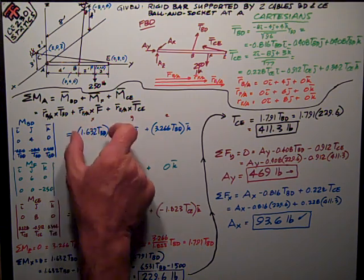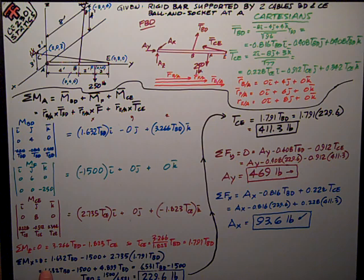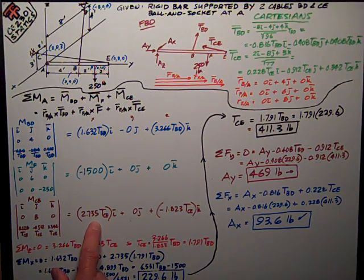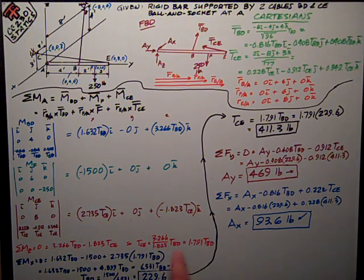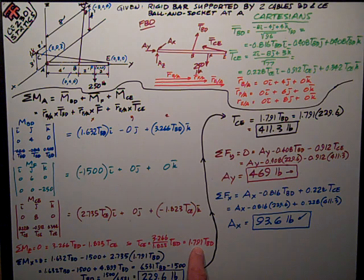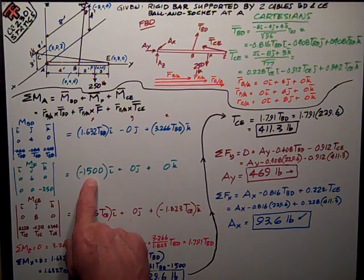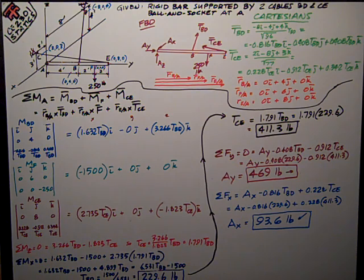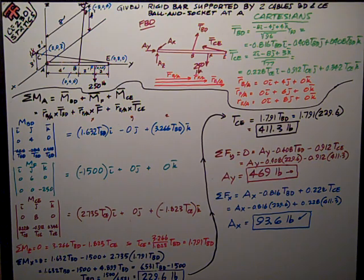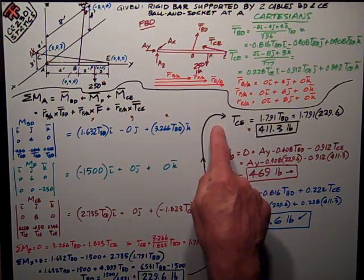Then I go over to the sum of moments in the X direction, which is this column, and write it all out. Substitute in for this term here, 2.735 TCE, this value, which I got for TCE, is 1.791 TBD. Do the math, do all the rearranging, and I get that the force in TBD is this 1,500 foot-pounds moment divided by 6.531, so TBD is equal to 229.6, or 230 pounds. Once I know that, I'm home free, just got to do all the math.